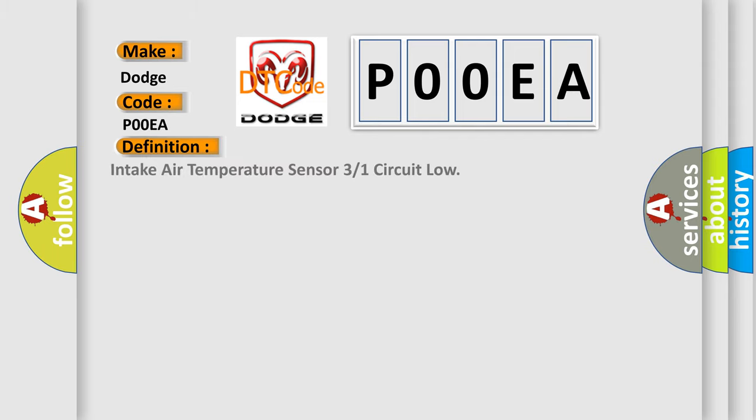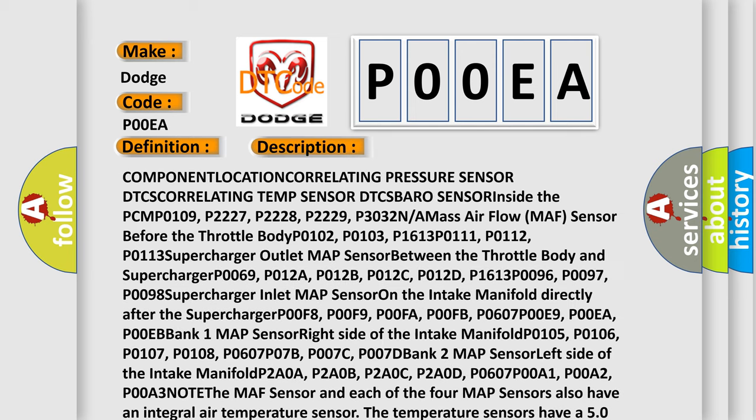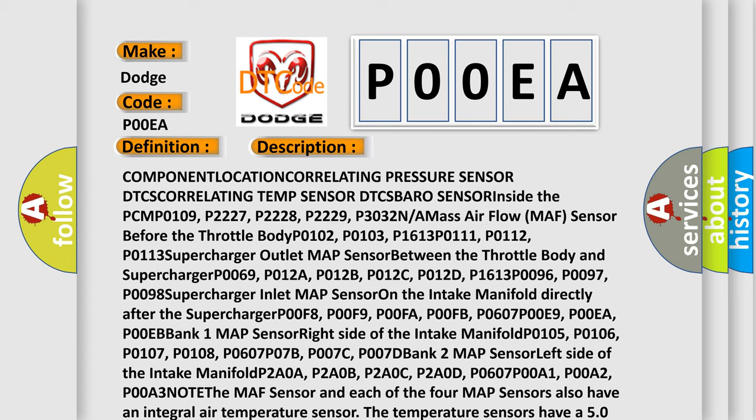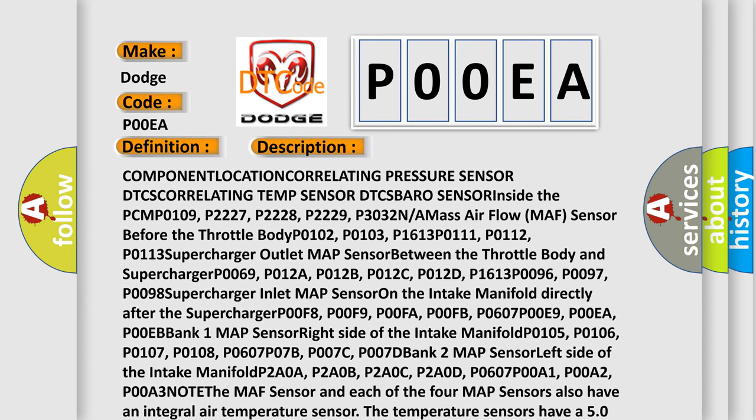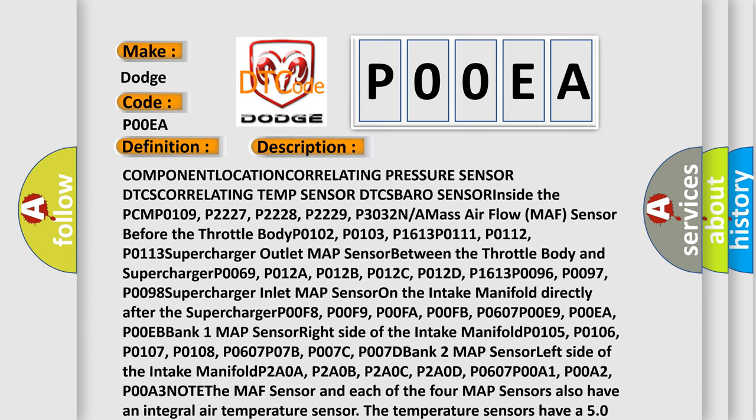The basic definition is Intake air temperature sensor 3 or 1 circuit low. And now this is a short description of this DTC code.